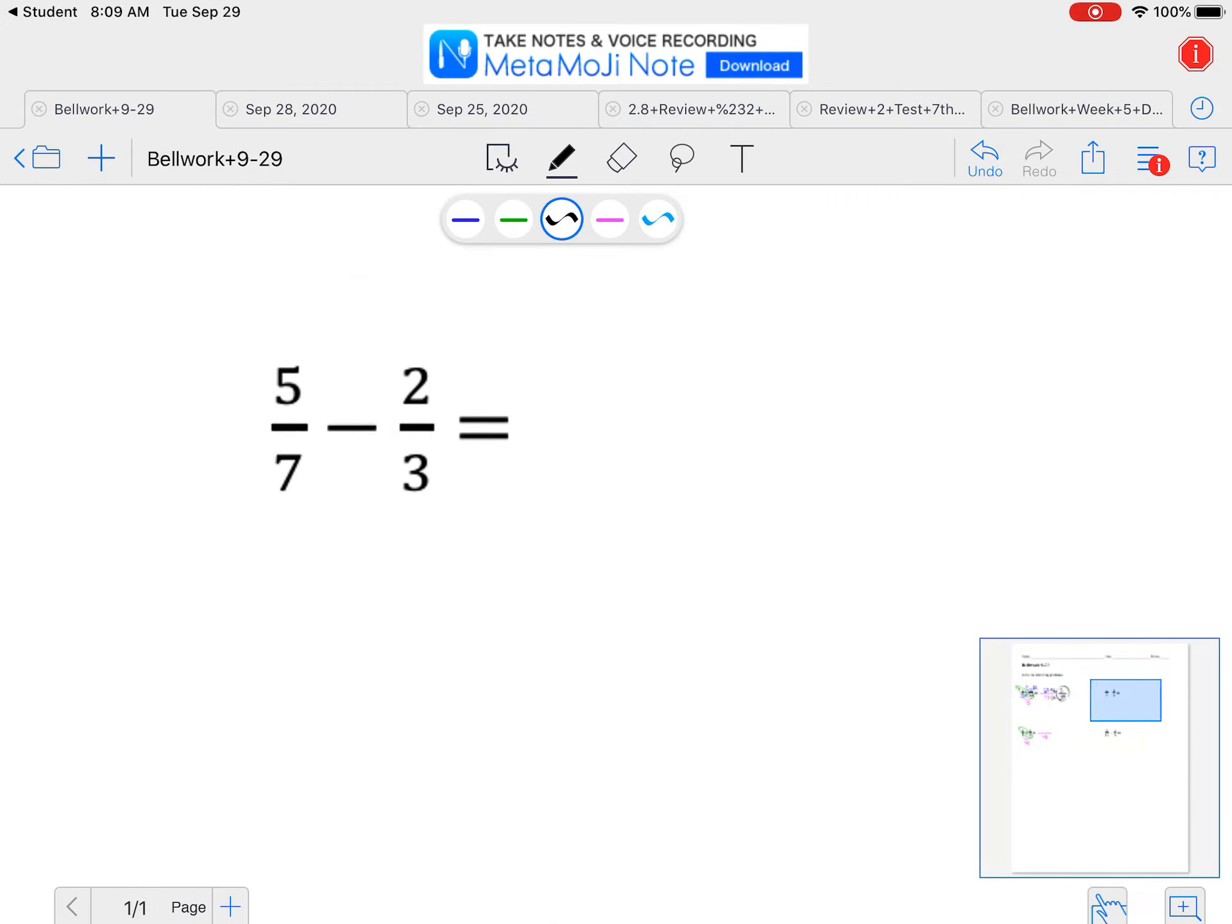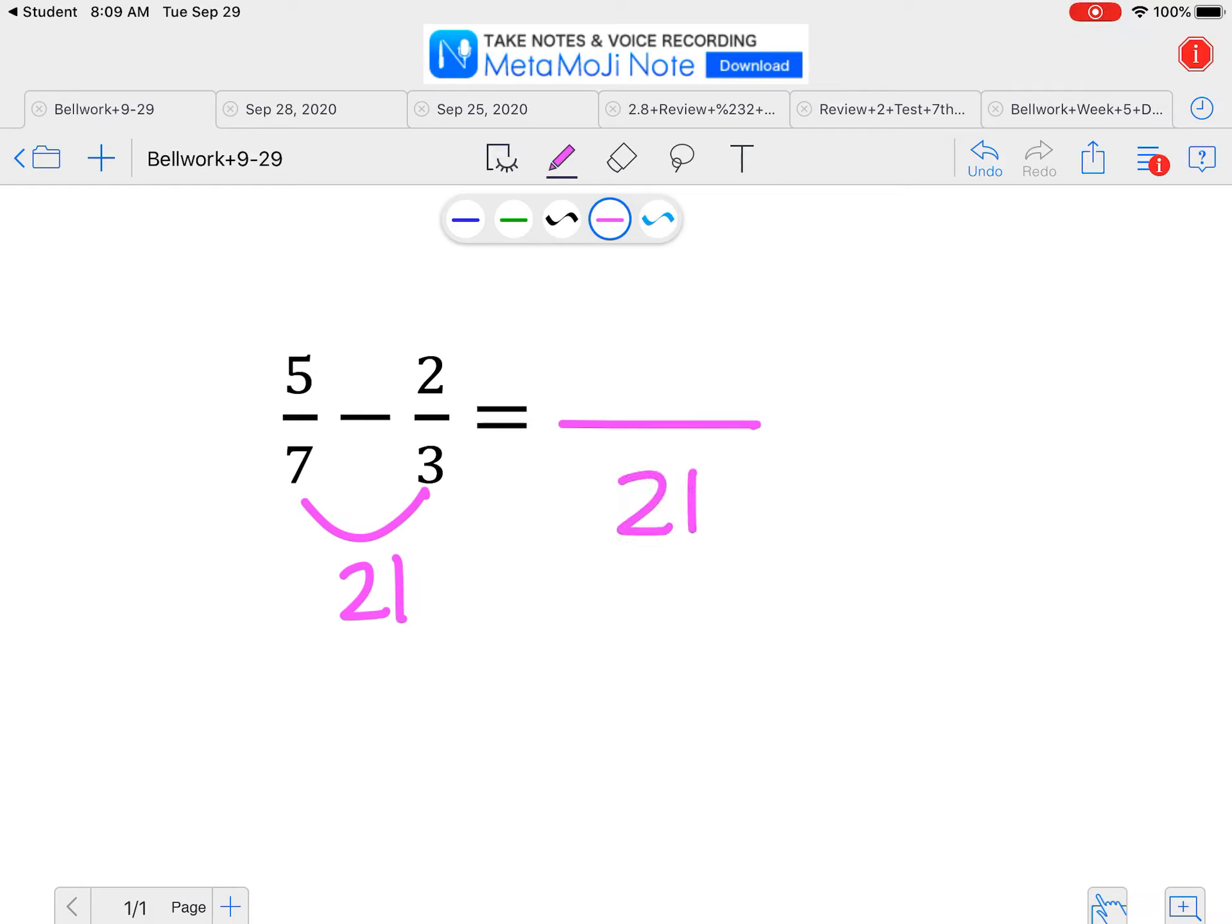Now subtracting is the same process. We need to look at the denominator and make sure they're the same. If they're not, multiply them together. And even though it's subtracting, we still need to do the same with our numerators. So 5 times 3 is 15, and 7 times 2 is 14. This time it's a subtract question, so 15 minus 14 is just 1.